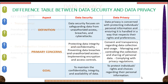Now we will see a comprehensive difference table between data security and data privacy. First of all, Definition: Data security focuses on safeguarding data from unauthorized access, breaches, and cyber attacks. Similarly, data privacy is concerned with protecting individuals' personal information and ensuring it is handled in a way that respects their rights and preferences.